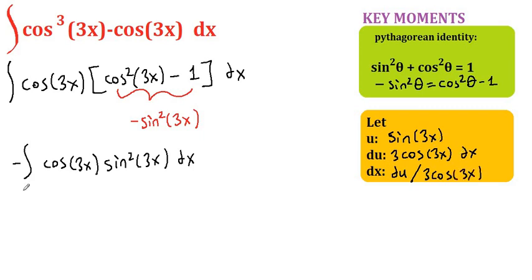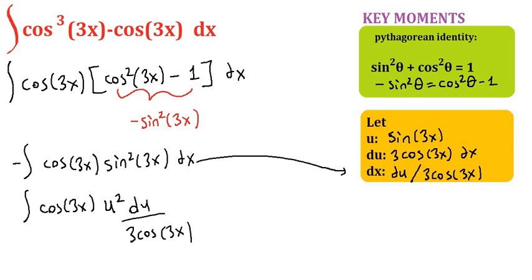Now let's rewrite everything in terms of u. So we have cosine of 3x here. Instead of sine squared of 3x we have u squared. And instead of dx we have du over 3 cosine of 3x. The cosine of 3x terms cancel out, and we are left with